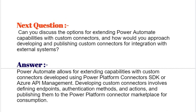Next question: Can you discuss the options for extending Power Automate capabilities with custom connectors, and how would you approach developing and publishing custom connectors for integration with external systems? Power Automate allows extending capabilities with custom connectors developed using the Power Platform Connectors SDK or Azure API Management. Developing custom connectors involves defining endpoints, authentication methods, and actions, and publishing them to the Power Platform Connector marketplace for consumption.